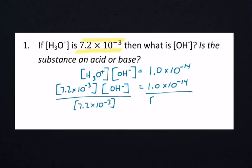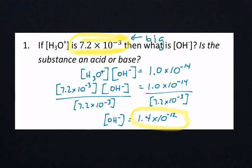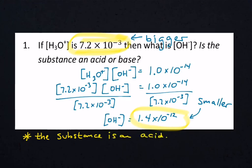Put everything within parentheses in the calculator. Work from the top down: 1.0 times 10 to the negative 14th divided by 7.2 times 10 to the negative 3rd. We get OH- equals 1.4 times 10 to the negative 12th. Since 7.2 times 10 to the negative 3rd is bigger than 1.4 times 10 to the negative 12th, H3O+ is larger than OH-, so the substance is an acid.